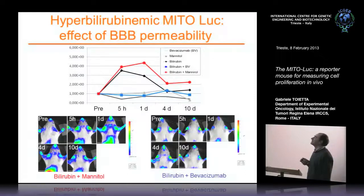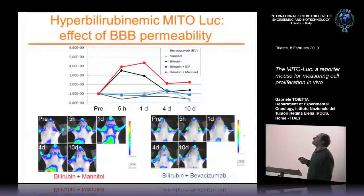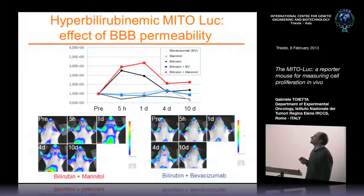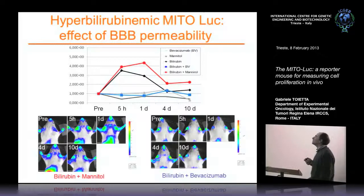Here is the quantification of luciferase levels at the brain region. With bilirubin treatment alone, there is an increase in the luciferase signal. With bilirubin plus Mannitol, the signal was even stronger. Mannitol alone and the antibody alone have no effect — the two gray lines. The association of bilirubin with bevacizumab basically dropped the level of luciferase activity to background level.